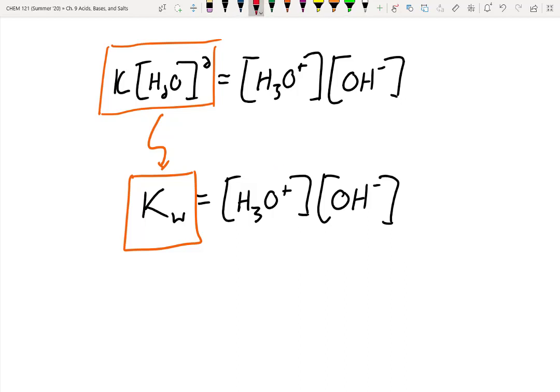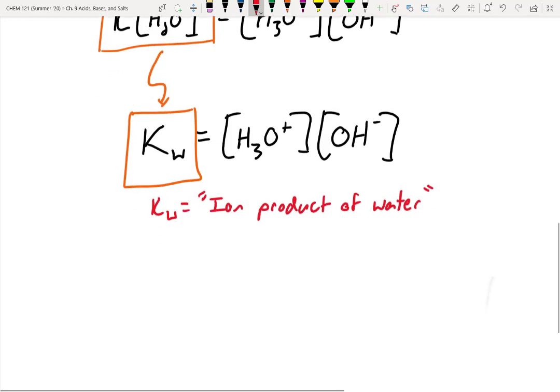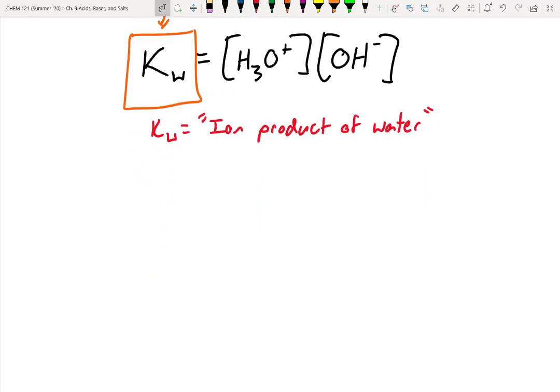And this new constant, they just call KW for water. So the W just stands for water. And this is still going to be equal to the hydronium concentration times the hydroxide concentration. So we've just kind of simplified this by saying water is essentially unchanged during this reaction. But we do make a little bit of this and a little bit of this. So this term right here, KW, is called the ion product of water. And it's just treated as a constant.